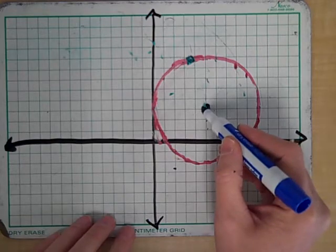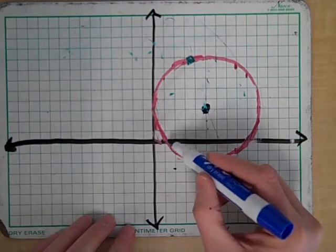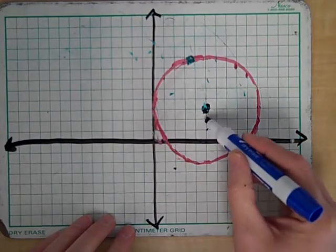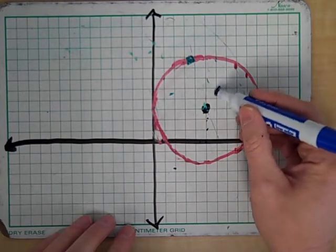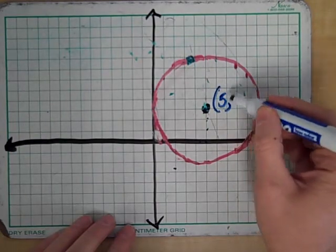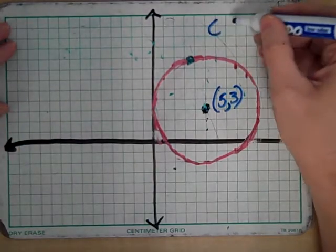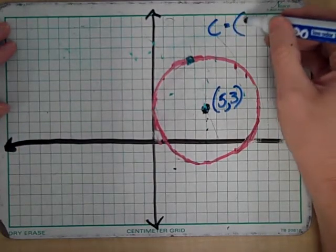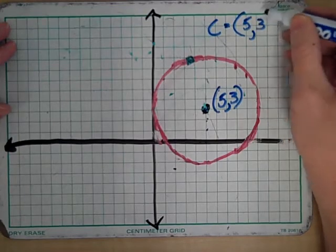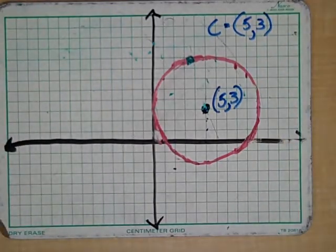So what I want you to first of all look at: there are two characteristics that are really strong about circles. First of all, they have a certain location for their center. [Counting grid squares] So the coordinates of the center of this circle in this particular circle are at five, three.